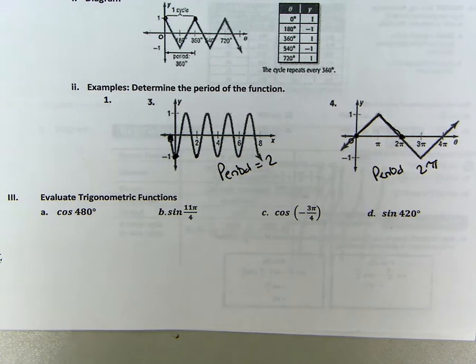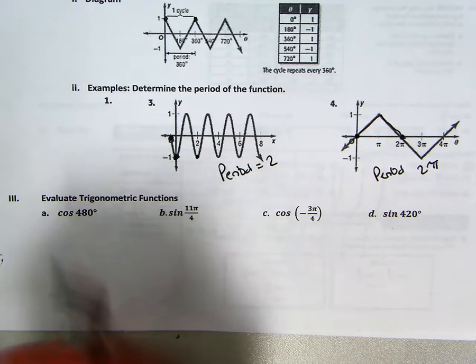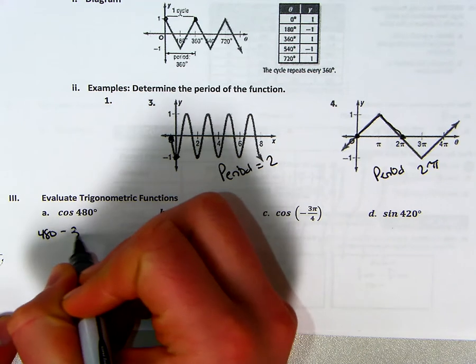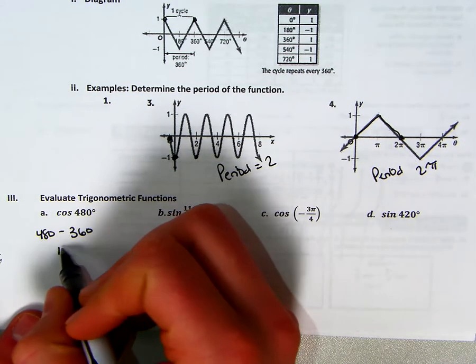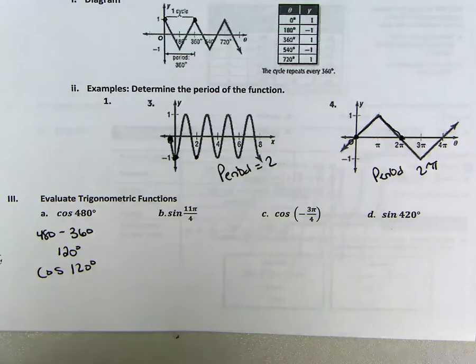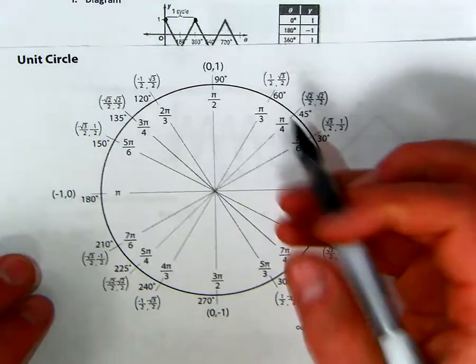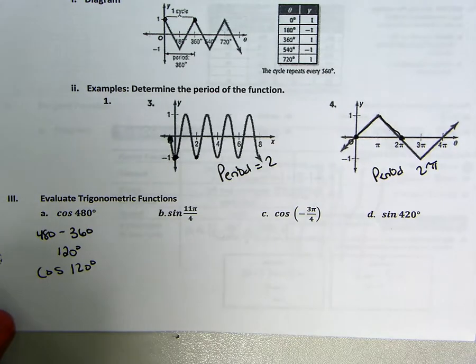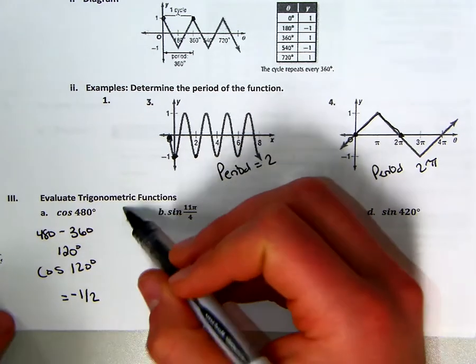And then we have evaluate trigonometric functions. Now notice 480 is bigger than 360. So to find what the cosine 480 is, our first step is take 480, subtract it from 360. And this is because we noticed that it's bigger than 360. And you get 120 degrees. So now we're just finding the cosine of 120 degrees. You can use your unit circle to do that. So 120 is right here, and it's negative 1 half. Pretty straightforward.